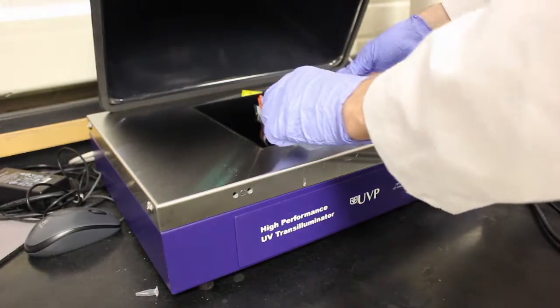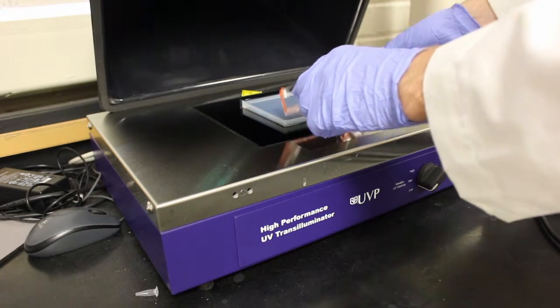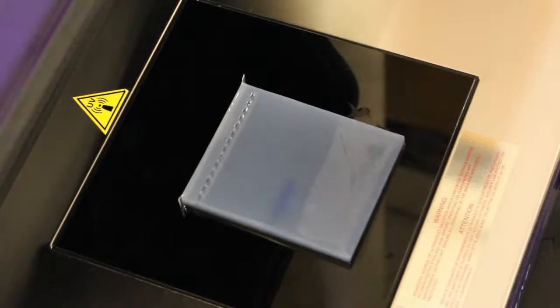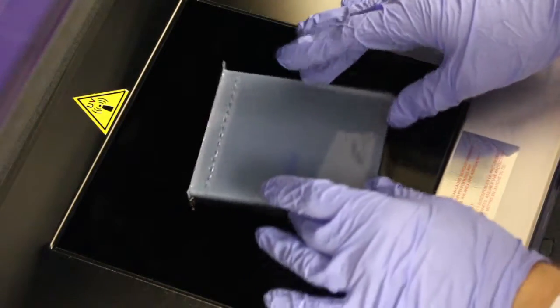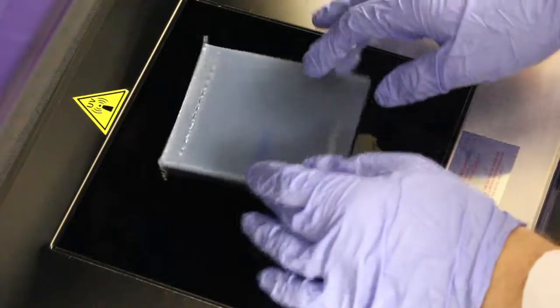Slide the gel onto the ultraviolet emitter. The gel can be moved around on the emitter to eliminate bubbles formed between the gel and the emitter surface.